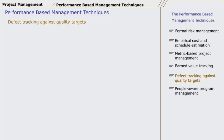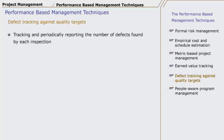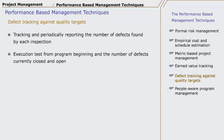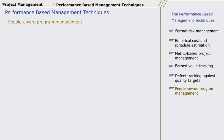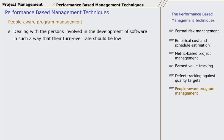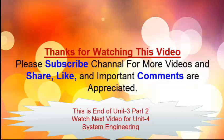Defect Tracking Against Quality Targets includes tracking and periodically reporting the number of defects found by each inspection and execution test from program beginning, and the number of defects currently closed and open. People Aware Program Management includes dealing with persons involved in the development of software in such a way that their turnover rate should be low.